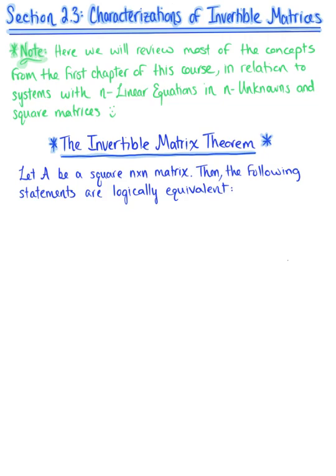Here we are looking at the characterizations of invertible matrices. In this section, we are going to be reviewing most of the concepts from the very beginning of this course — from Chapter 1 — and we are reviewing these concepts in relation to systems of linear equations with n linear equations in n unknowns and square matrices.